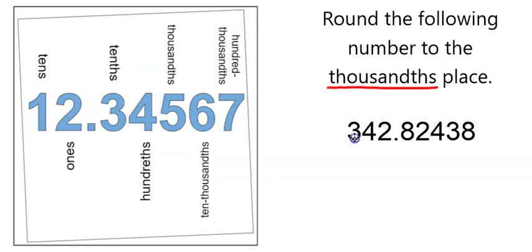So that means we need to identify the thousandths place in this number, and we can use this handy diagram to see that the thousandths place is the third number to the right of the decimal point.